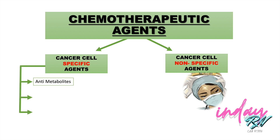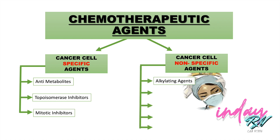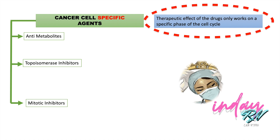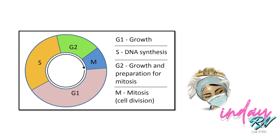The cell-specific agents include anti-metabolites, topoisomerase inhibitors, and mitotic inhibitors. The cancer cell non-specific agents include alkylating agents, nitrosoureas, antineoplastic antibiotics, monoclonal antibodies, and hormonal agents. So in the specific category we have three classifications, and in the non-specific we have five. The cell-specific agents have a therapeutic effect that only works on a specific phase of the cell cycle, so always remember the cell cycle phases: G1, S, G2, and M.